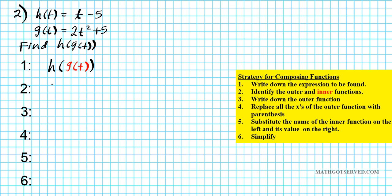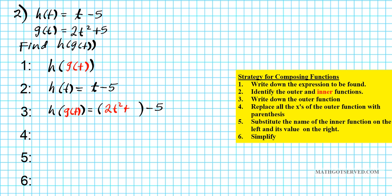So we're going to write down the outer function first. h of t is the outer function, equal to t minus 5. Now, after writing down the outer function, we're going to replace all the t's with parentheses — that is the independent variable here. We have h of parenthesis on the left, and the value — a binomial — goes on the right, minus 5. Now we substitute the name of the inner function, g of t, on the left, and then the value 2t squared plus 5 on the right. After carrying out the substitution as indicated in step 5, we're now going to simplify.